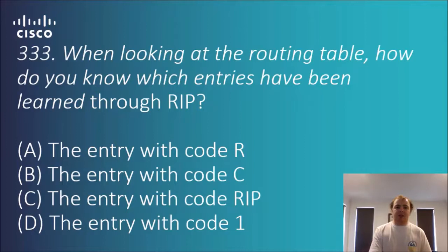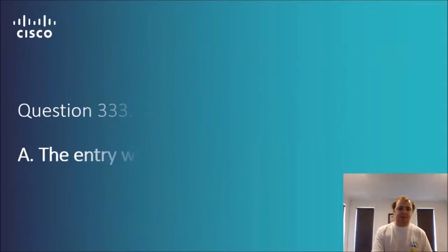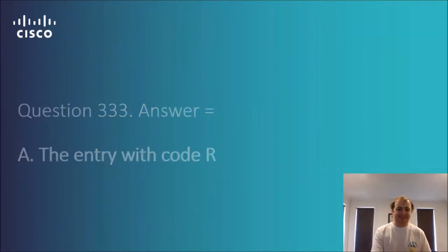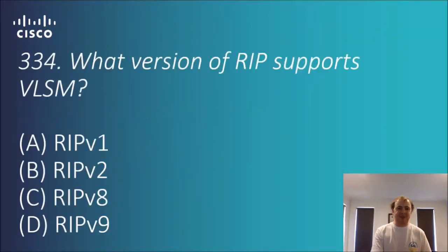Question 3.33: when looking at the routing table, how do you know which entries have been learned through RIP? The options are entry codes R, C, RIP, and 1. The answer is A — R. That is the entry code used to identify routes learned via RIP.